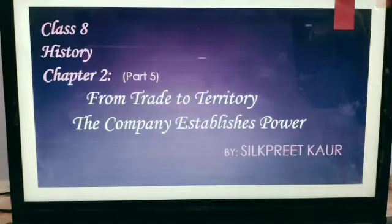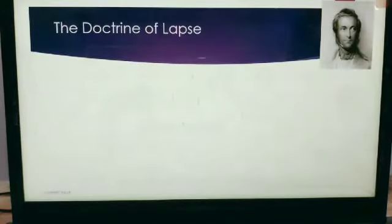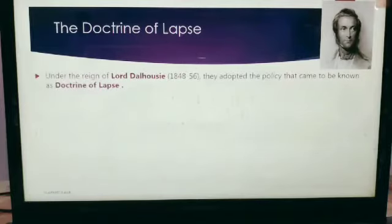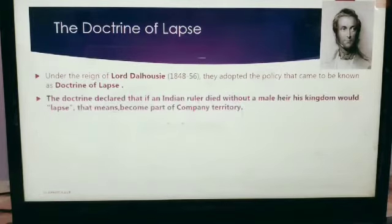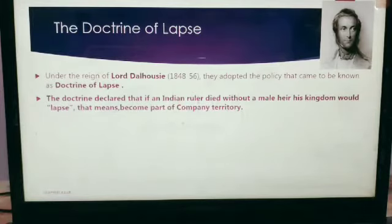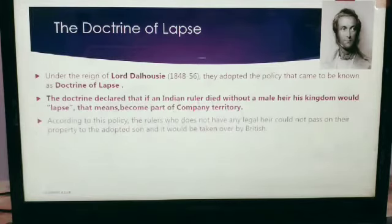We also know that they were using various kinds of policies to gain control over India. The next was the Doctrine of Lapse. Under the reign of Lord Dalhousie, the British adopted a policy that came to be known as the Doctrine of Lapse. The doctrine declared that if any Indian ruler died without a male heir, his kingdom would lapse — meaning it would become part of company territory.